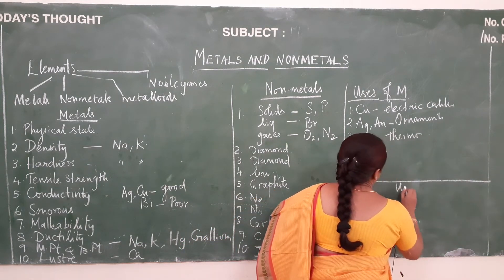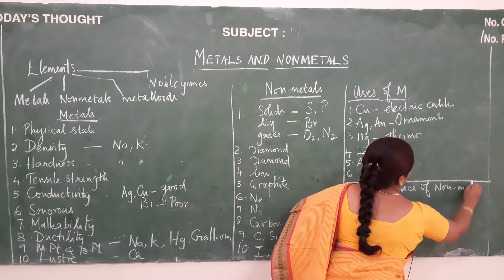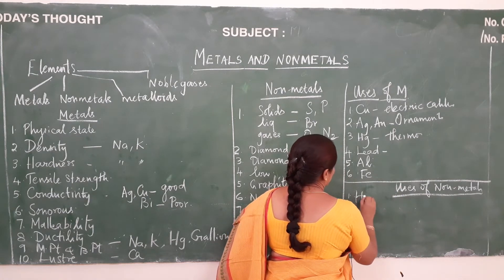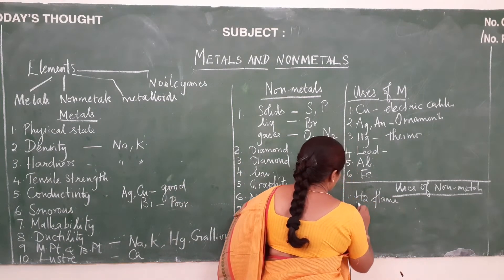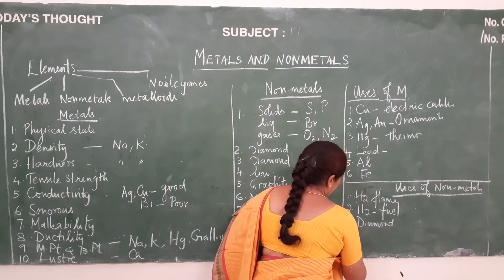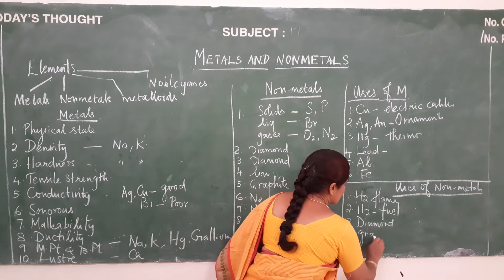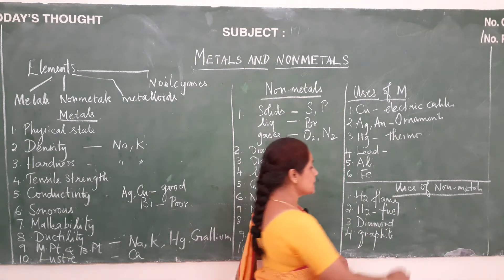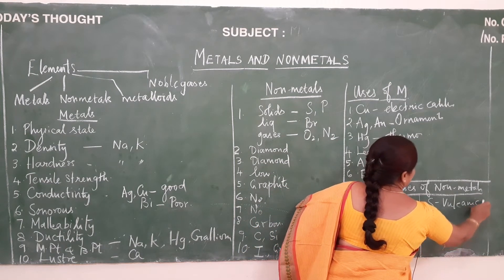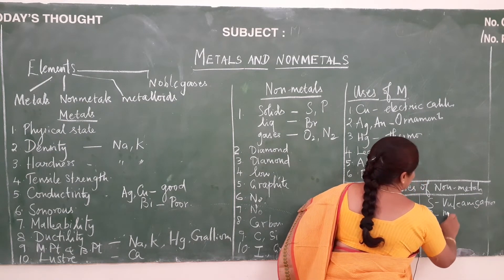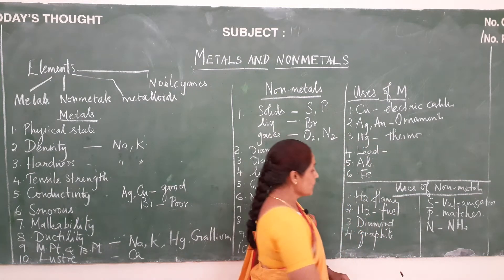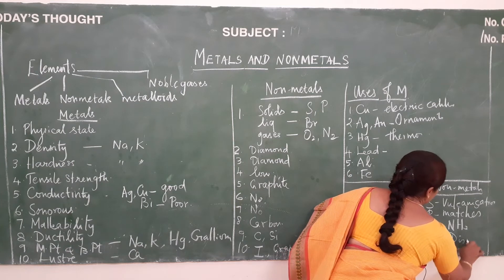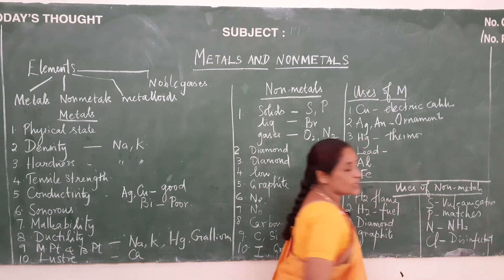Next, we will move on to uses of nonmetals. Hydrogen flame is used for welding purposes, and hydrogen is also used as a rocket fuel. Diamond is used for making jewelry. Graphite is used for making pencils. Sulfur is used for vulcanization purposes. Phosphorus is used in making matches. Nitrogen is used in the manufacture of ammonia. Chlorine is used as a disinfectant and bleaching agent.